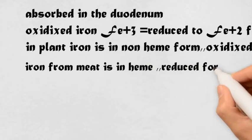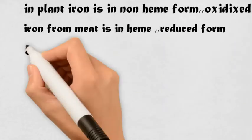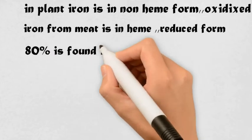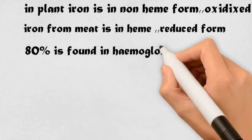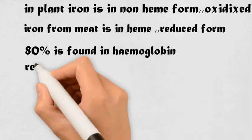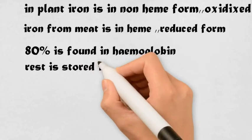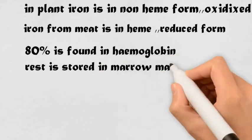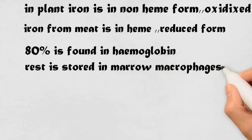About the storage of iron: 80% of the iron is stored in hemoglobin, while the remaining 20% is present in marrow macrophages, myoglobin, and enzymes.